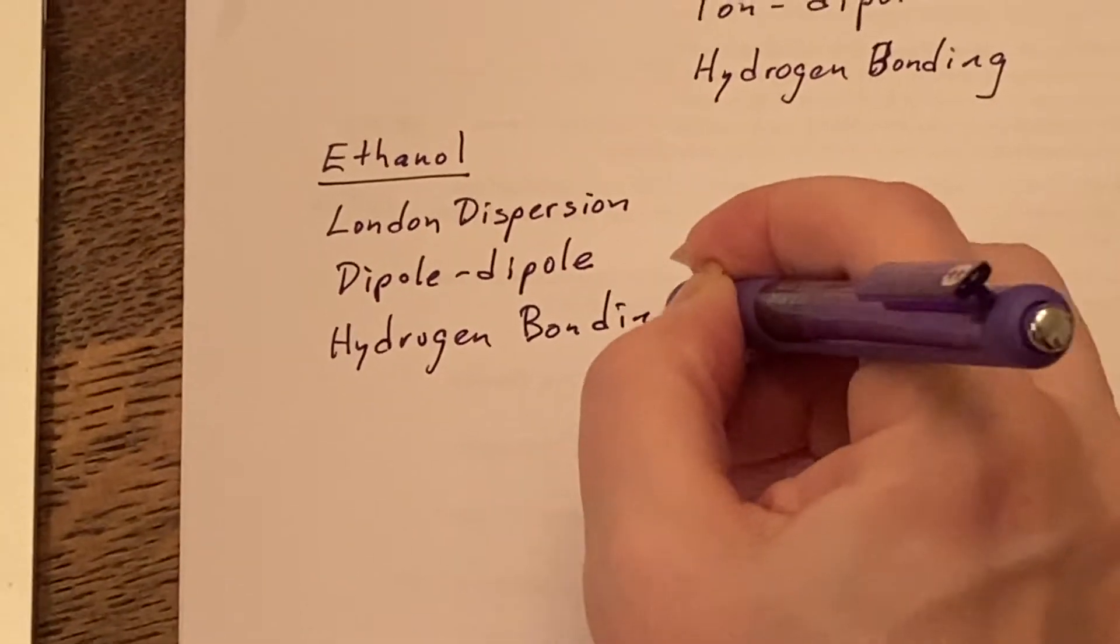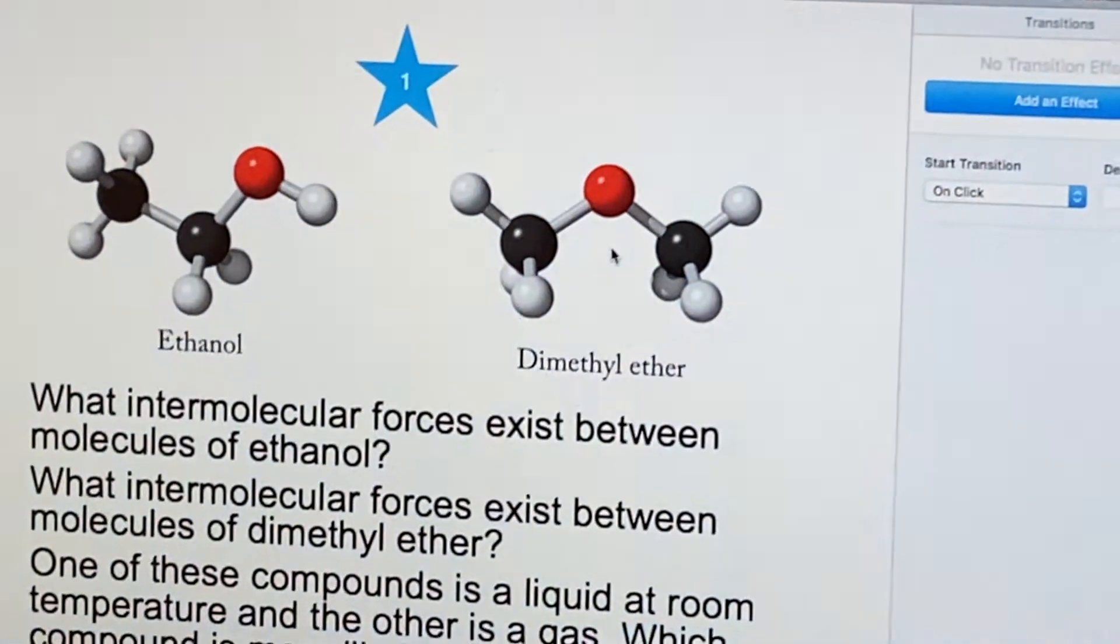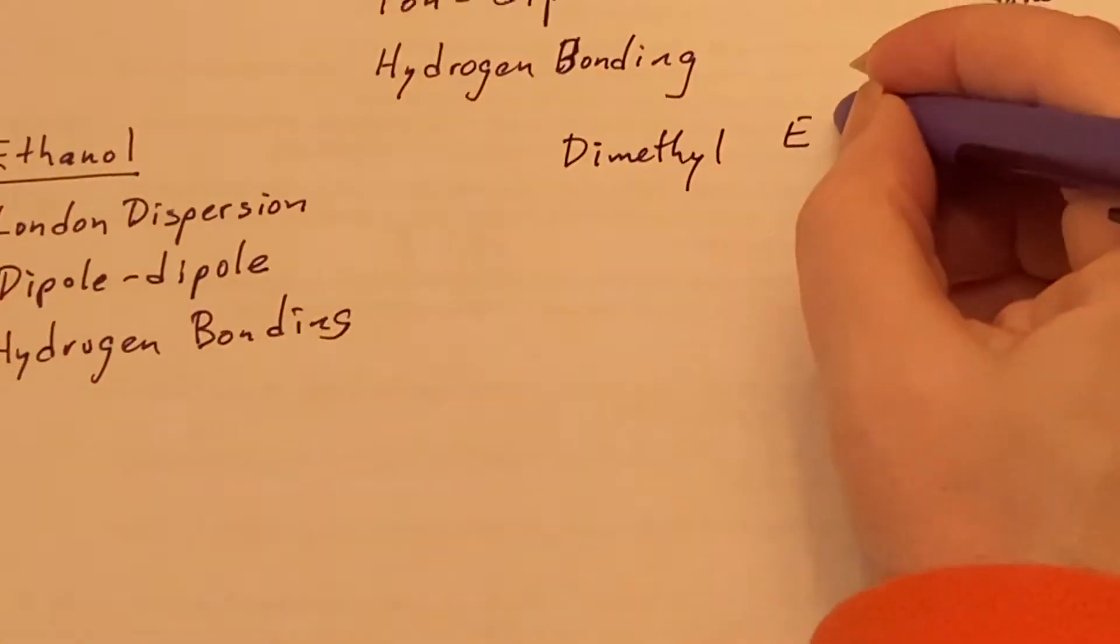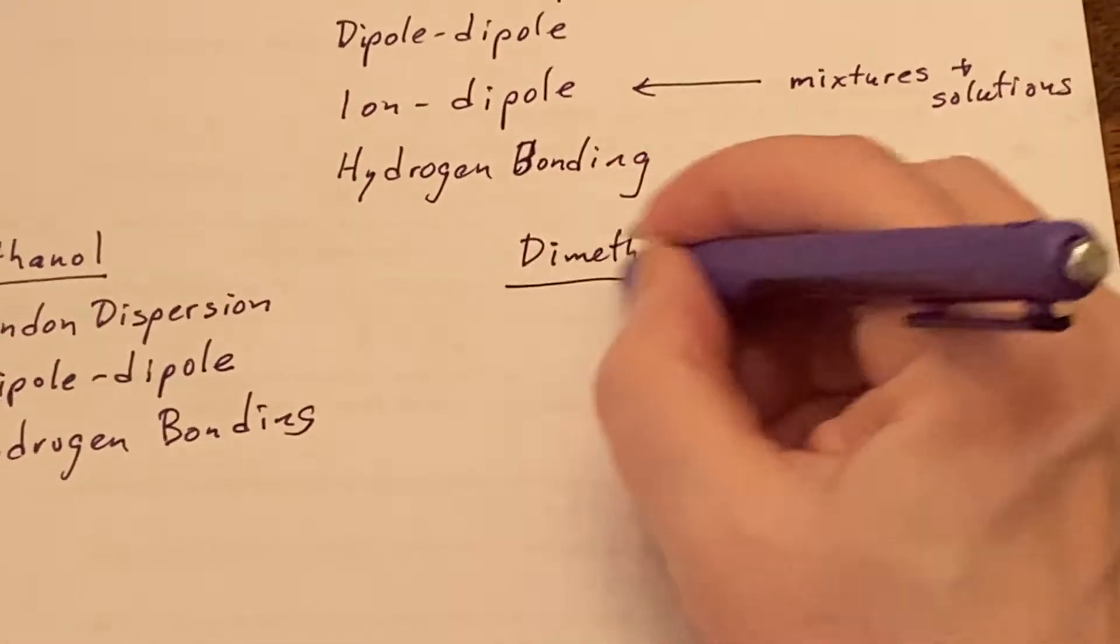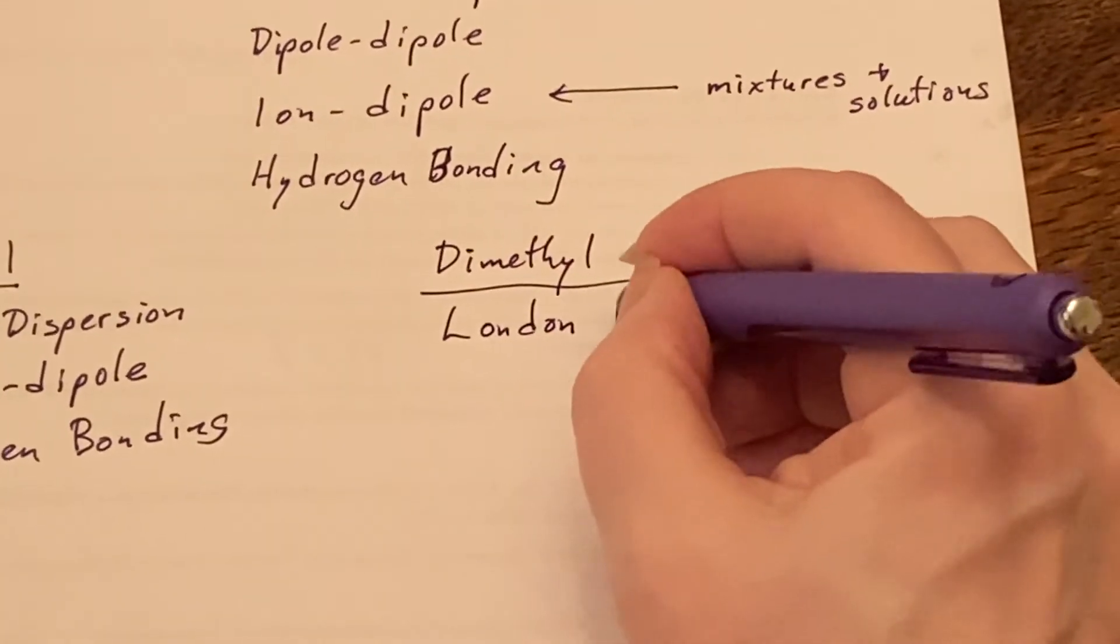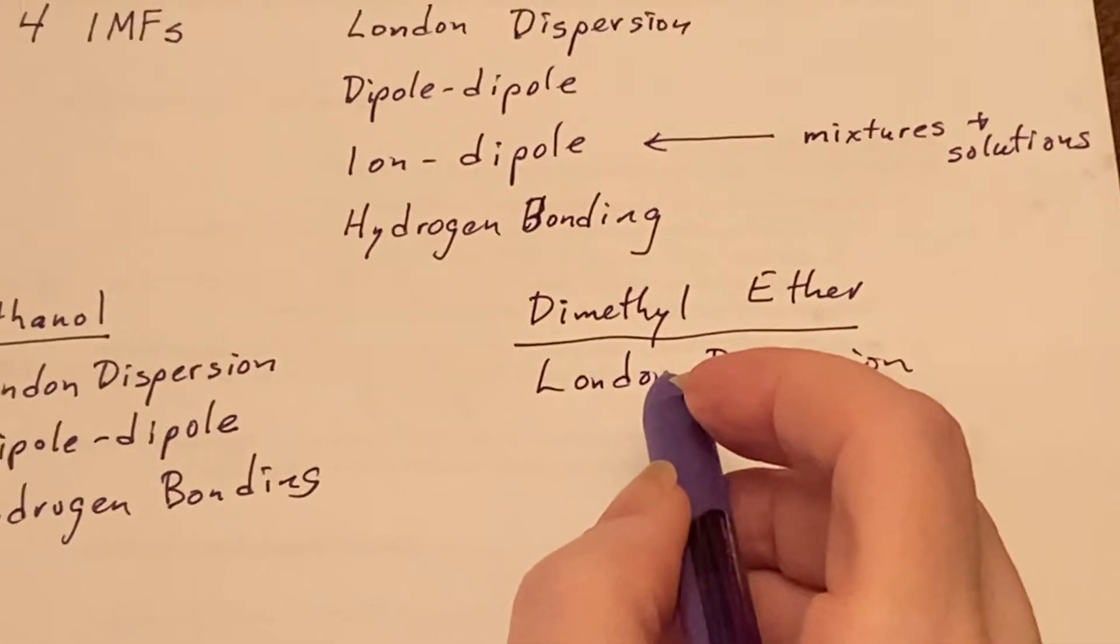Now let's turn our attention to the dimethyl ether. If you look at this, well, if I'm going to talk about the dimethyl ether, then I see that we have the usual that it has London dispersion forces, that's for sure. Does it have a dipole-dipole?